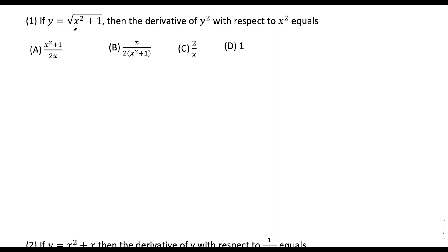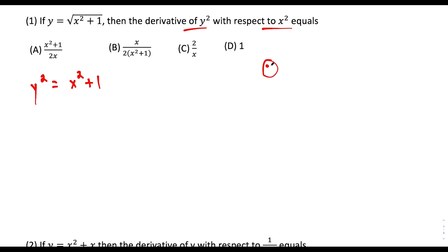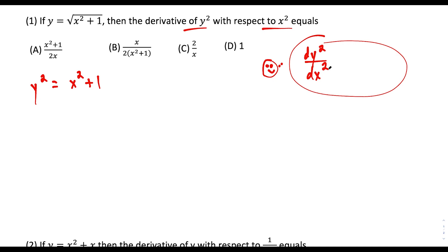First up, we have y equals square root of x² plus 1, and we want to find the derivative of y² with respect to x². For this question, the first thing we could do is find y². y² would be equal to x² plus 1 — we're just squaring both sides and that's going to break the radical. From here you want to think about what they mean by the derivative of y² with respect to x², which is dy² over dx².